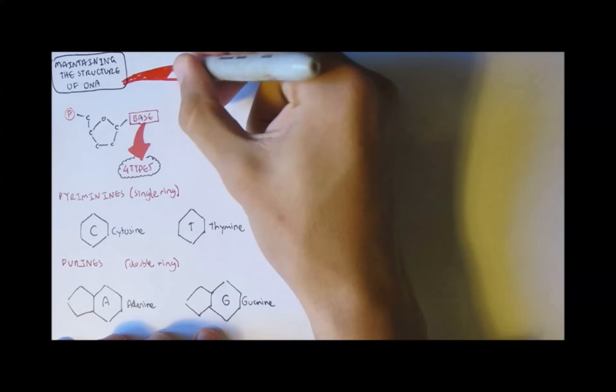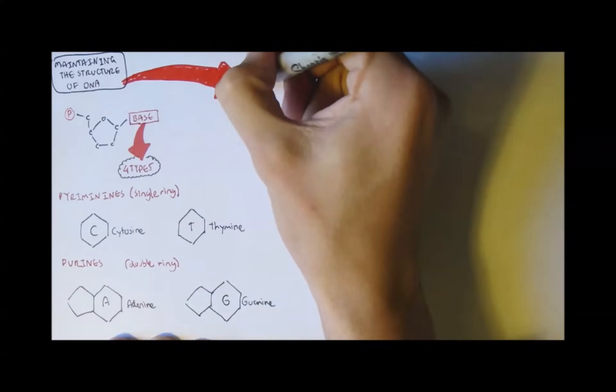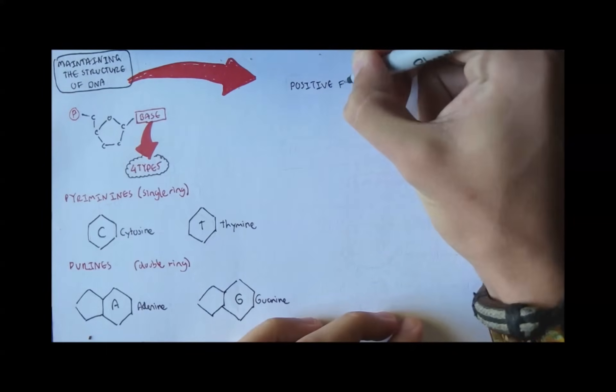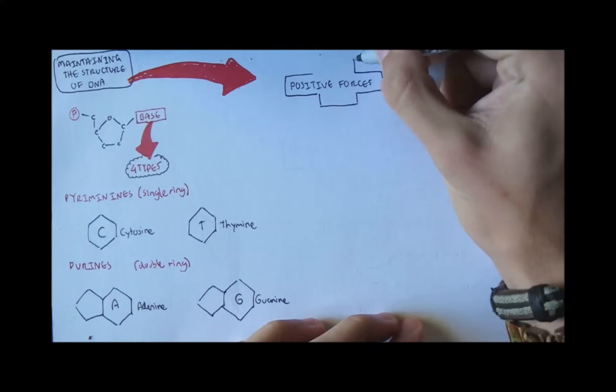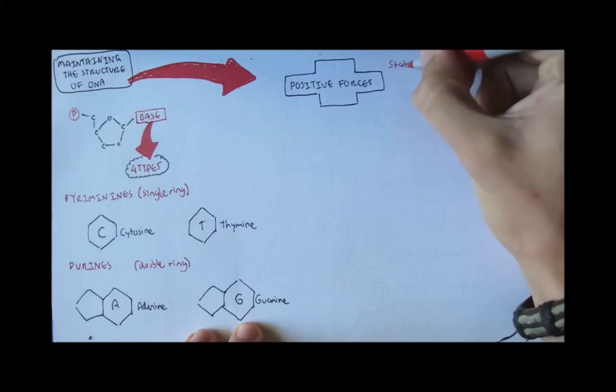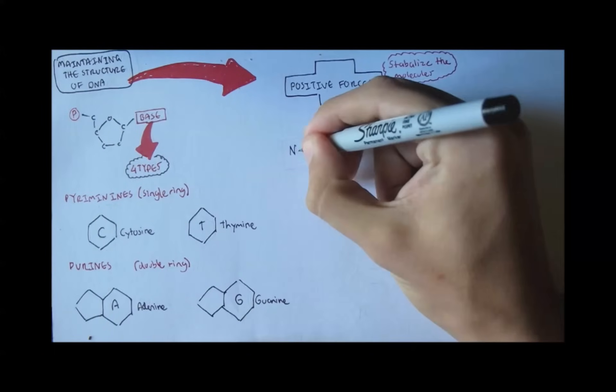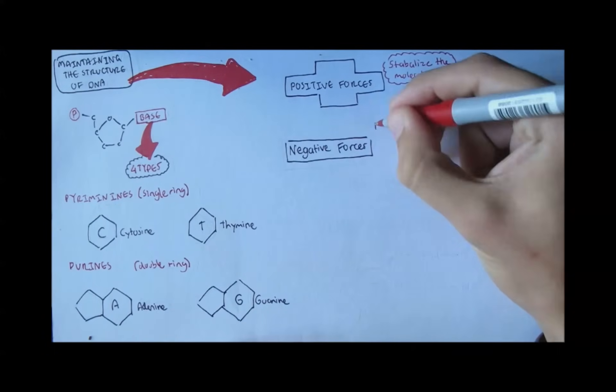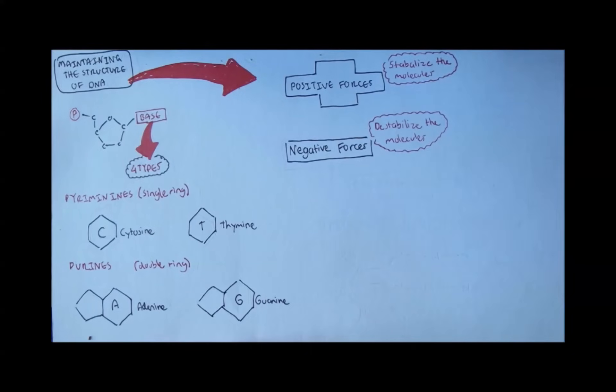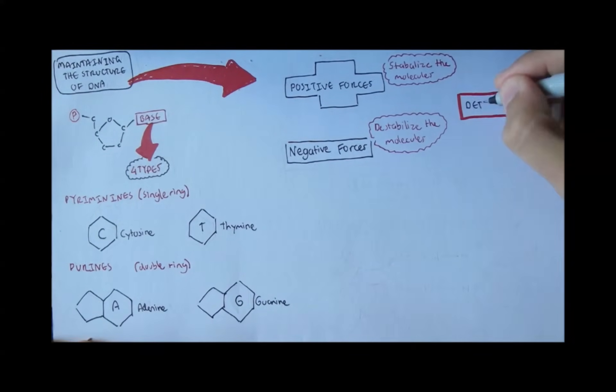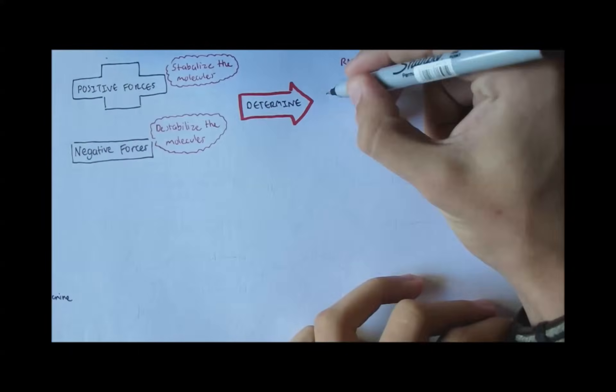So knowing this information, we can now explore and understand what helps maintain the structure of DNA. There are positive forces which help stabilize the DNA structure, and there are negative forces which try to destabilize the structure. And both of these essentially determine if the RNA or DNA is double-stranded or single-stranded.